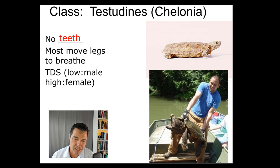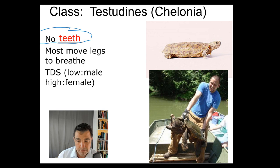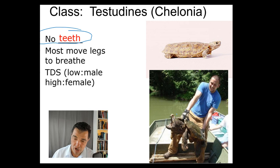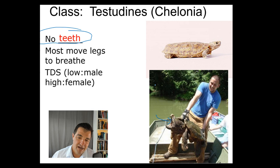Turtles don't have any teeth. Evolutionarily along the way their teeth were lost. Fish before them had teeth, but turtles lost them. Although they don't have teeth, they have a very often razor-sharp beak where the top and the bottom can slide past each other like scissors. So although they have no teeth, you don't go sticking your hand in an alligator snapping turtle's mouth, or you'll lose your fingers or your hand.